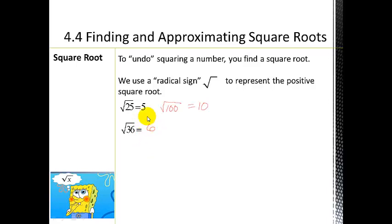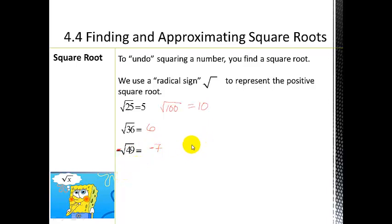When there's a negative sign outside the radical it can be a little tricky to see. For example, negative square root of 49: I take the square root of 49, which is 7, and then apply the negative to it — just like negative 1 times 7 gives negative 7. A little tricky, but remember the negative sits outside the radical sign.